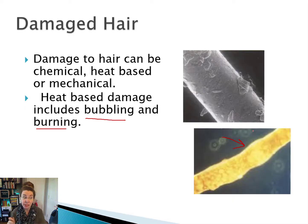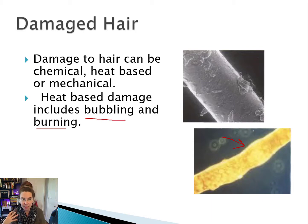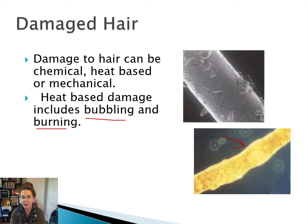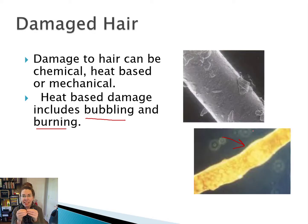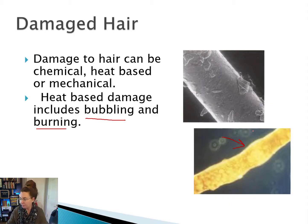For example, maybe somebody was impatient — they took a shower, their hair was damp, and they decided to straighten it with a hair iron. They turn the hair iron really high, and get steam from the hair as they iron it. What happens is there's actually moisture trapped between the keratin fibers of the cortex. And just like popcorn, when that trapped moisture gets turned into steam, pressure builds, causing it to expand and form these bubbles.